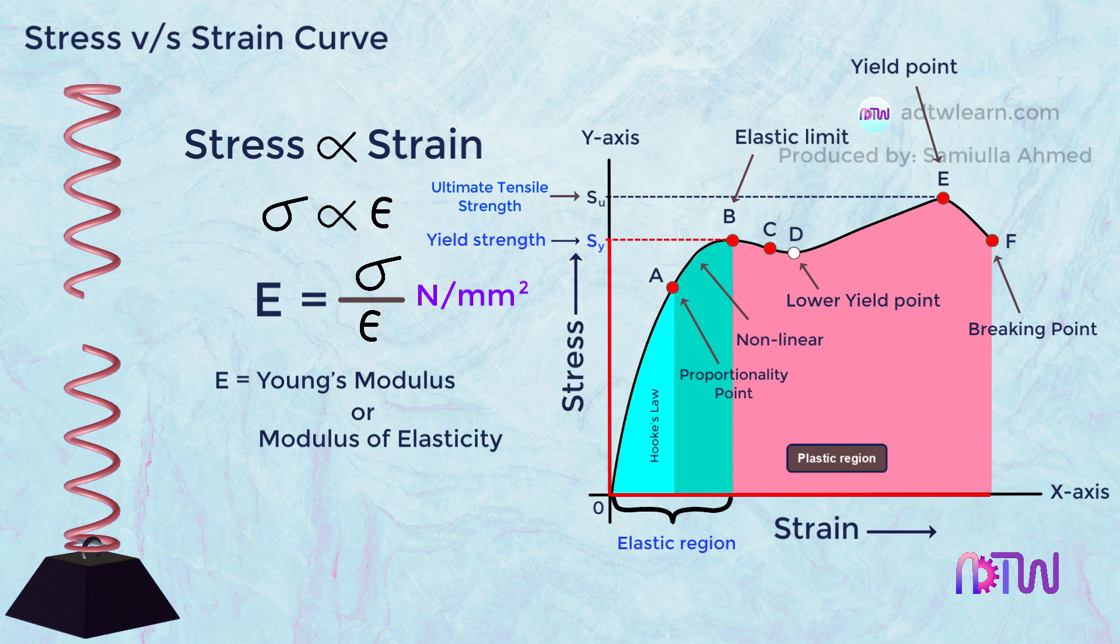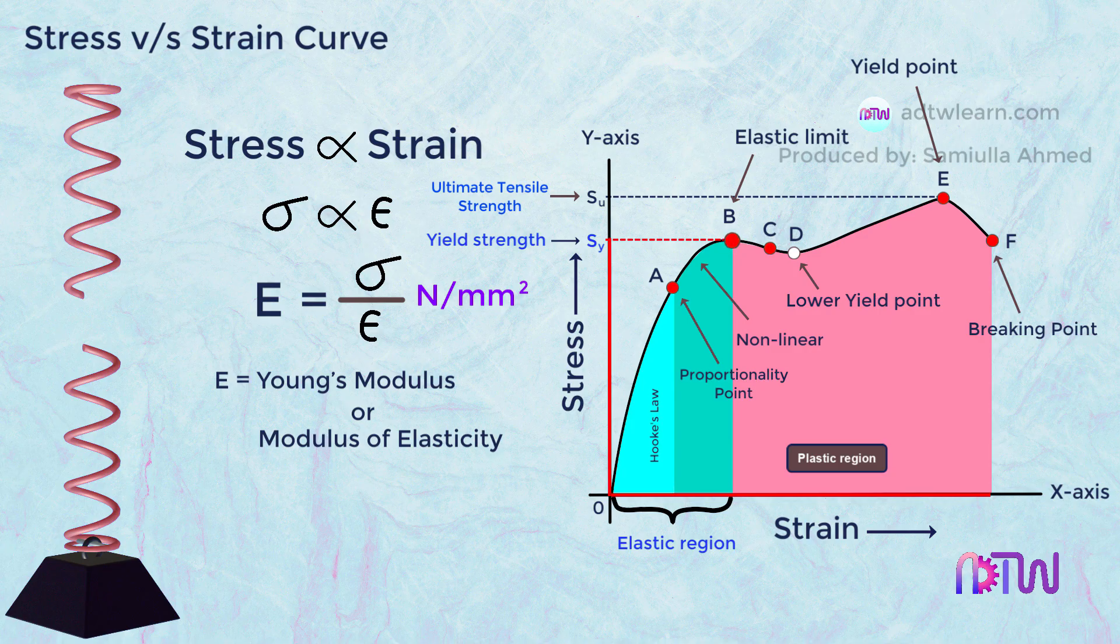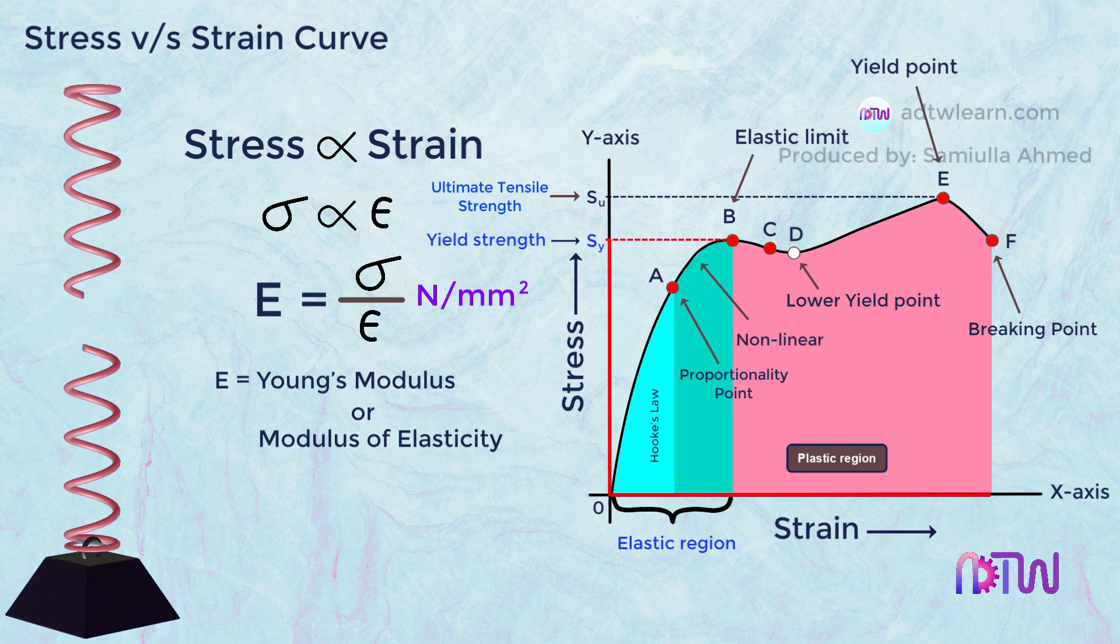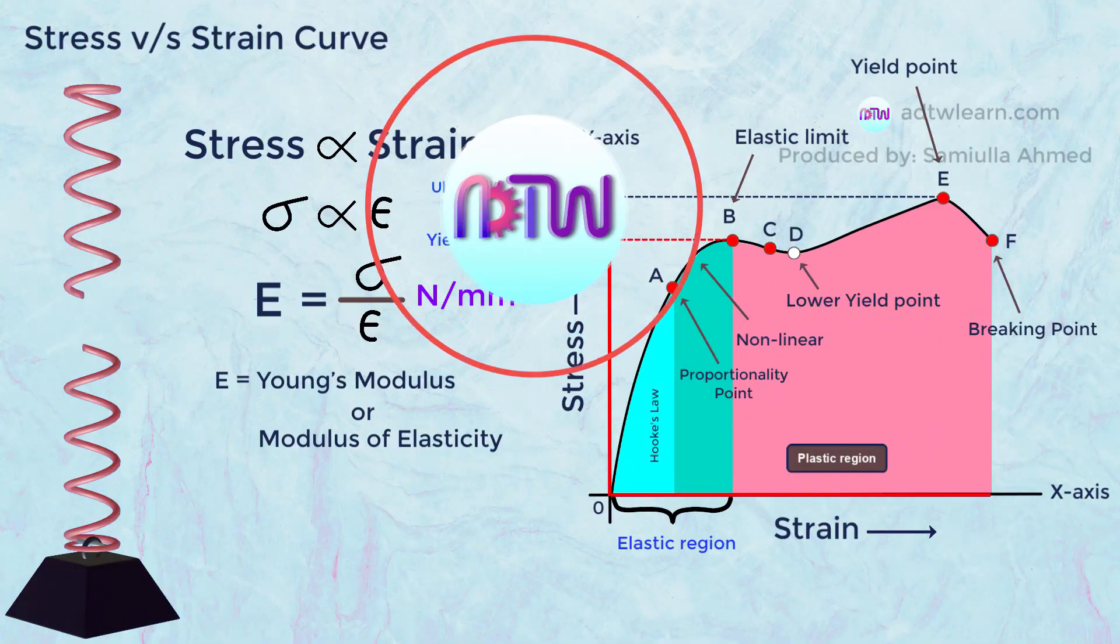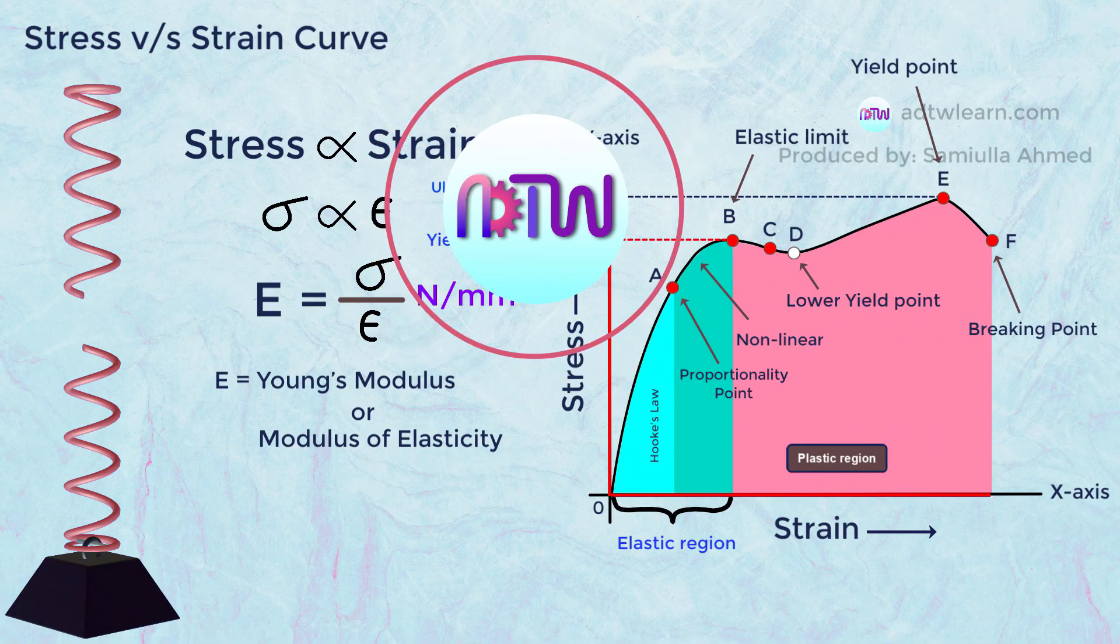The stress strain curve varies from material to material. Brittle materials have these yield, ultimate strength, and breaking point very close to each other. I hope you have understood the stress versus strain curve.